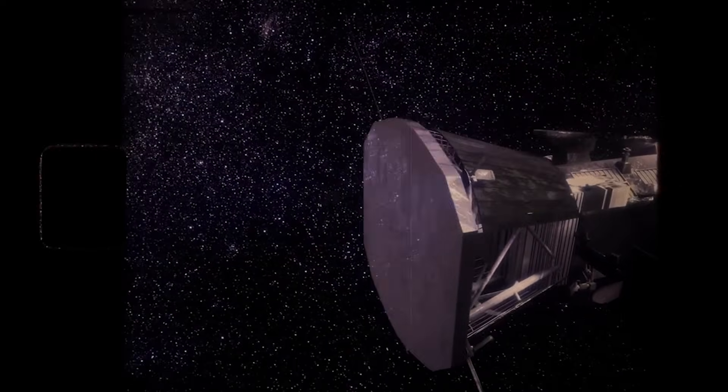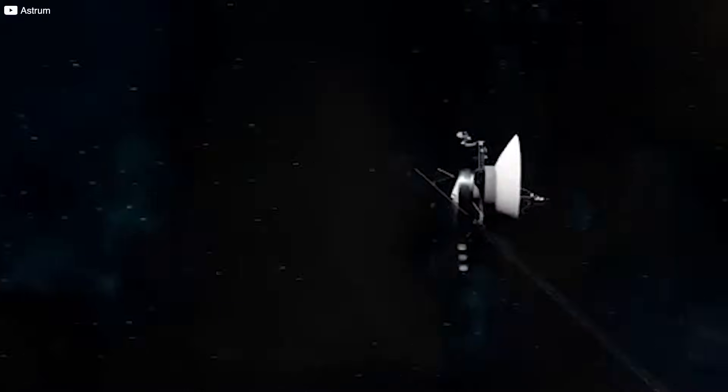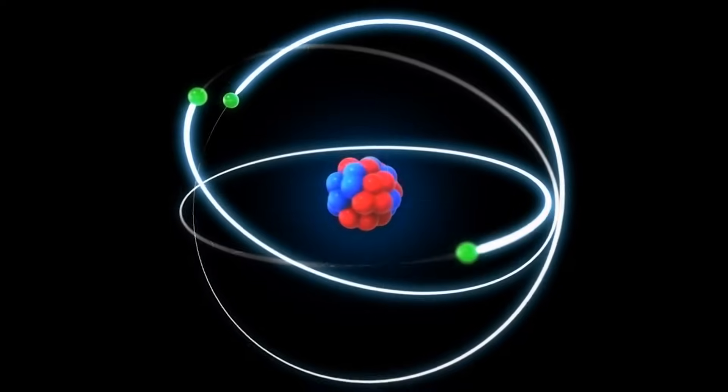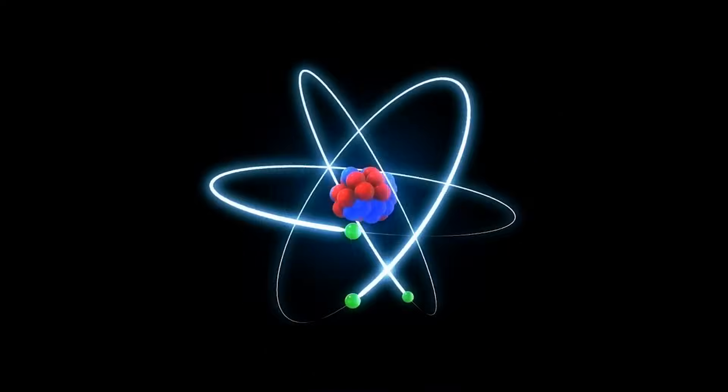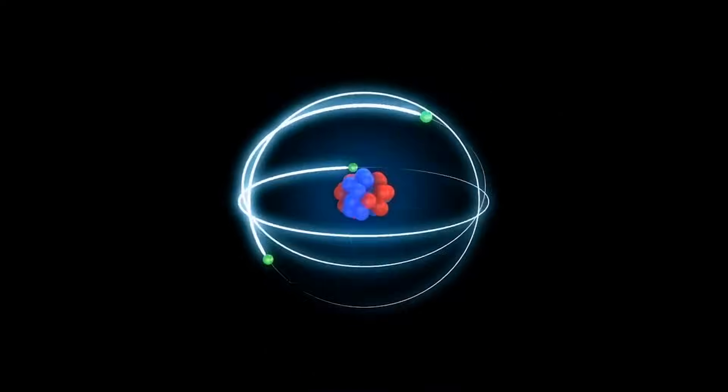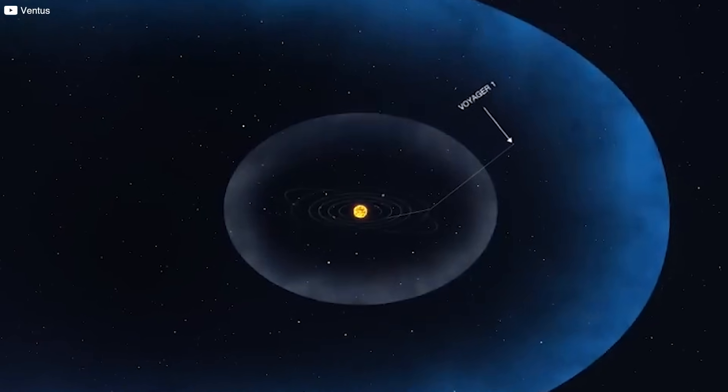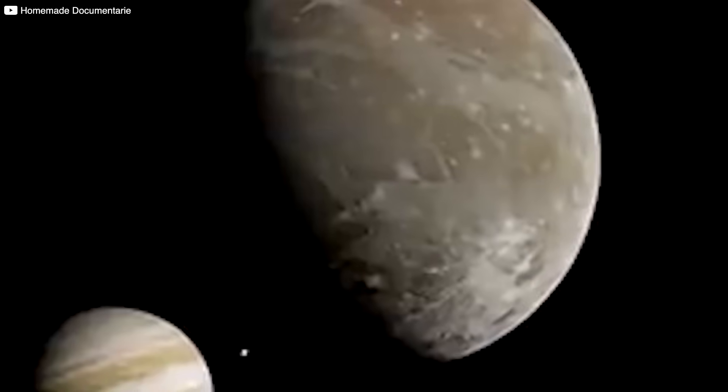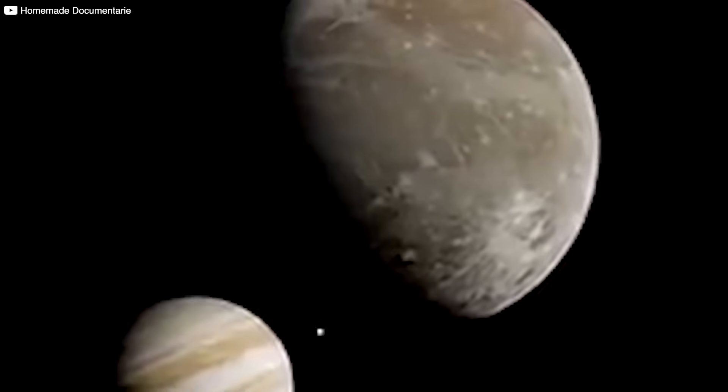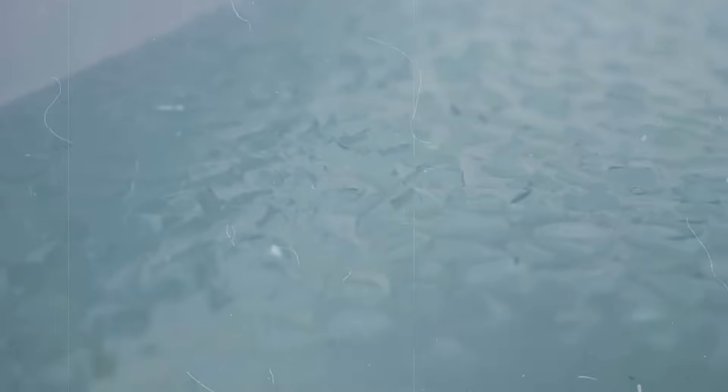It's also important to remember how unique this data is. While missions like NASA's IBEX, Interstellar Boundary Explorer, also study the boundaries of the heliosphere, they do so remotely by detecting energetic neutral atoms, ENAs, created by interactions between solar wind and interstellar gas. IBEX has provided fantastic global maps of the heliosphere's interaction zone, but it's like looking at a distant shore through binoculars. You can see the shape, but you can't feel the sand or measure the water temperature.